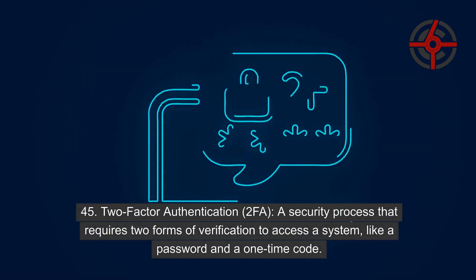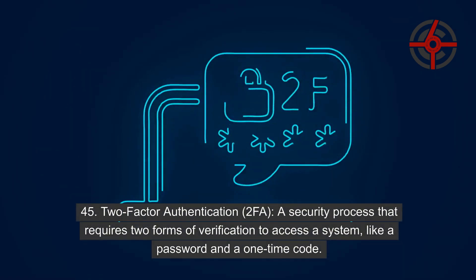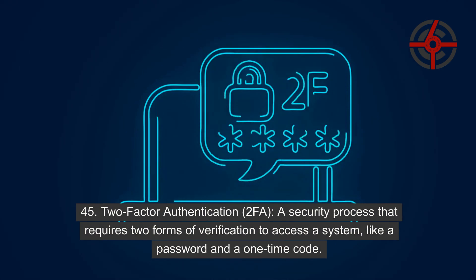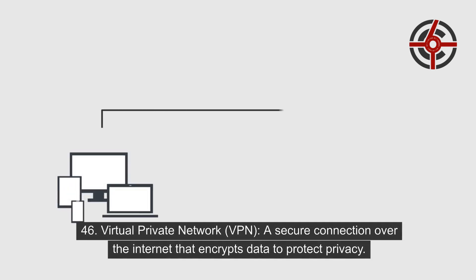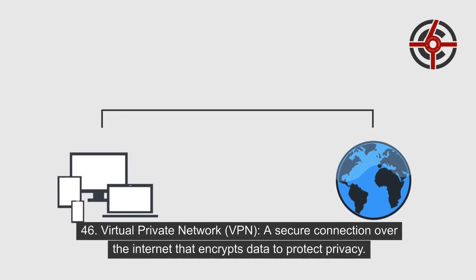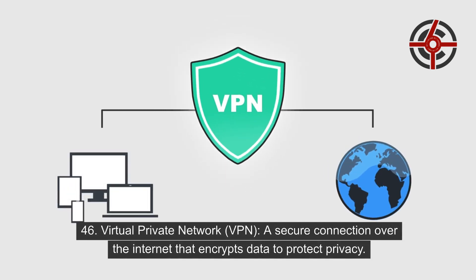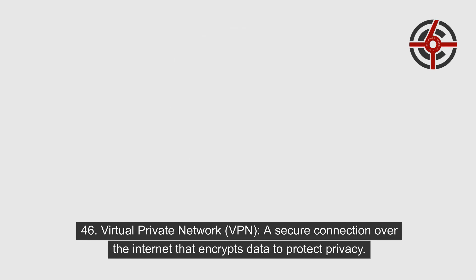45. Two-factor authentication (2FA): A security process that requires two forms of verification to access a system, like a password and a one-time code. 46. Virtual Private Network (VPN): A secure connection over the internet that encrypts data to protect privacy.